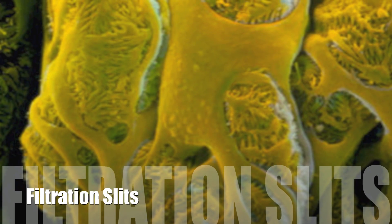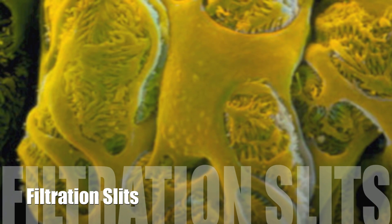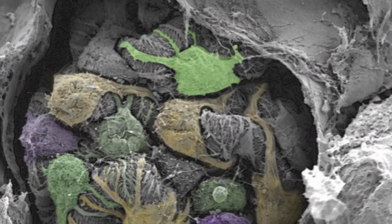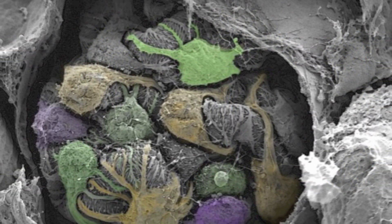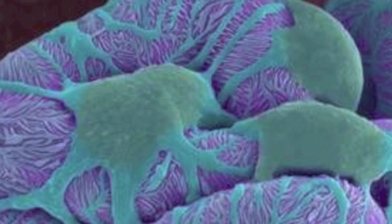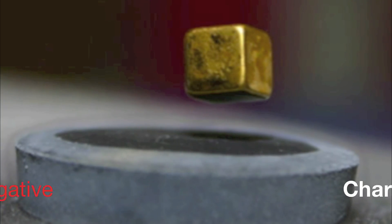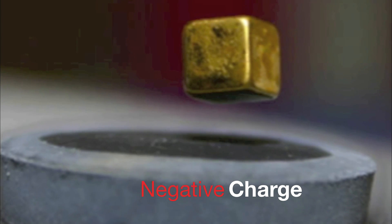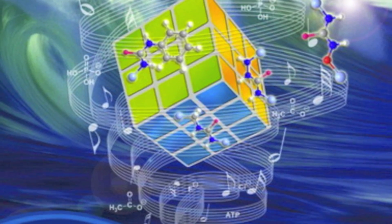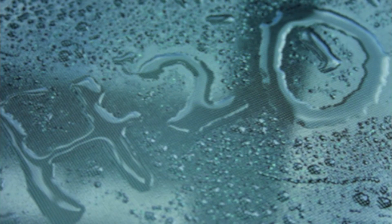The third barrier in the filtration membrane is a filtration slit made of podocytes. A podocyte has a bulbous body and many thick arms; it is a specialized cell that covers the outside of the capillary. Each arm has numerous extensions called foot processes, or pedicles, that wrap around the capillaries and intertwine with one another in a comb-like fashion. The pedicles have negatively charged filtration slits that also prevent large anions from being filtered.